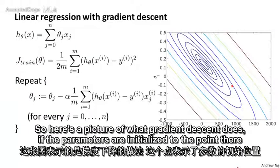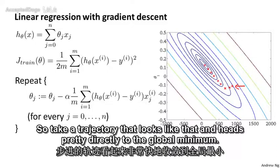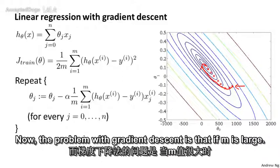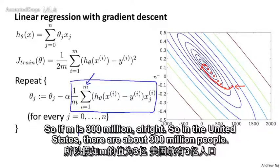Here's a picture of what gradient descent does. If the parameters are initialized at a point, then as you run gradient descent, different iterations will take the parameters to the global minimum, hitting pretty directly to the global minimum. The problem with gradient descent is that if m is large, then computing this derivative term can be very expensive because it requires summing over all m examples.